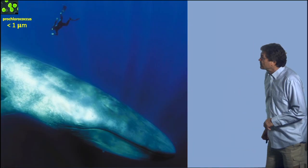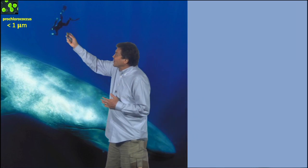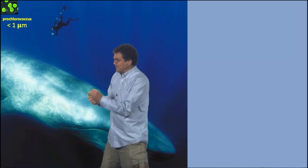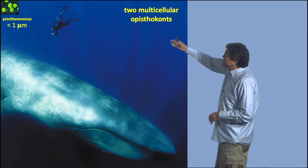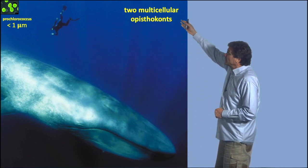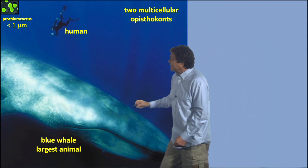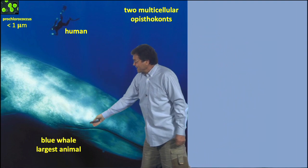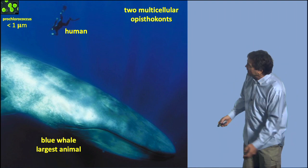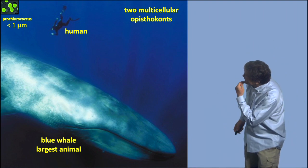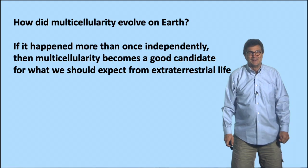Up here in the corner is Prochlorococcus — that's one of those simple unicellular things. And in this diagram we see two multicellular examples: a human and a giant blue whale. They both used to be amphibians, and maybe that's why the human looks like an amphibian there.